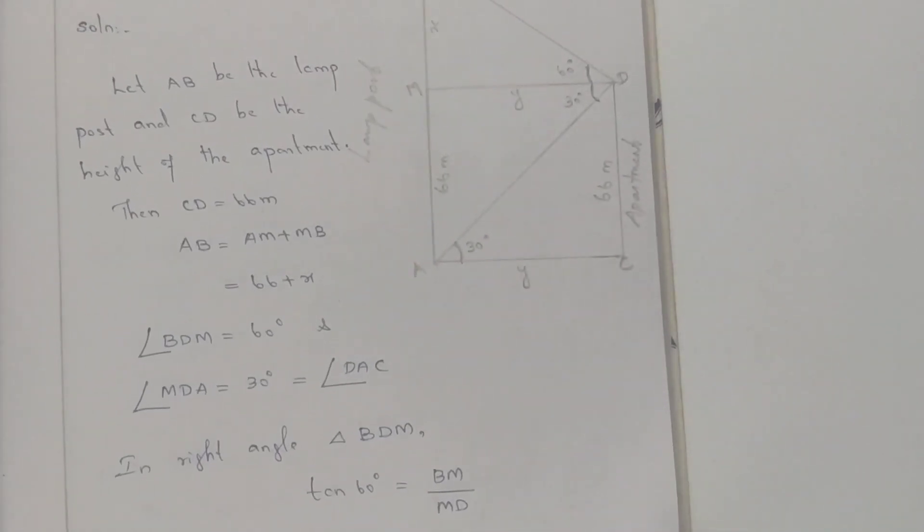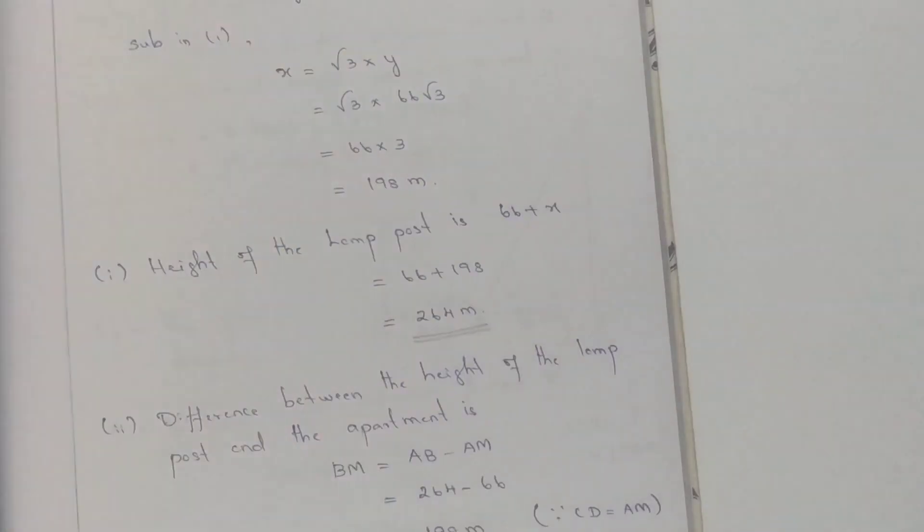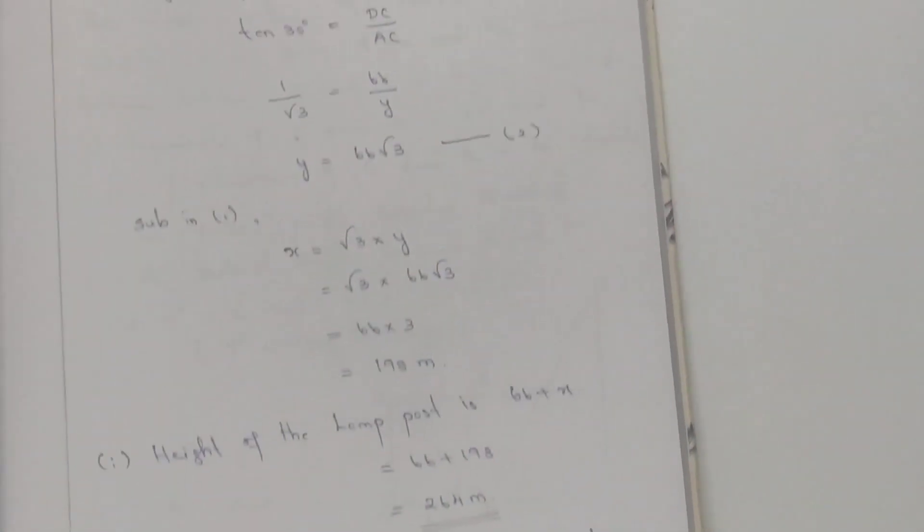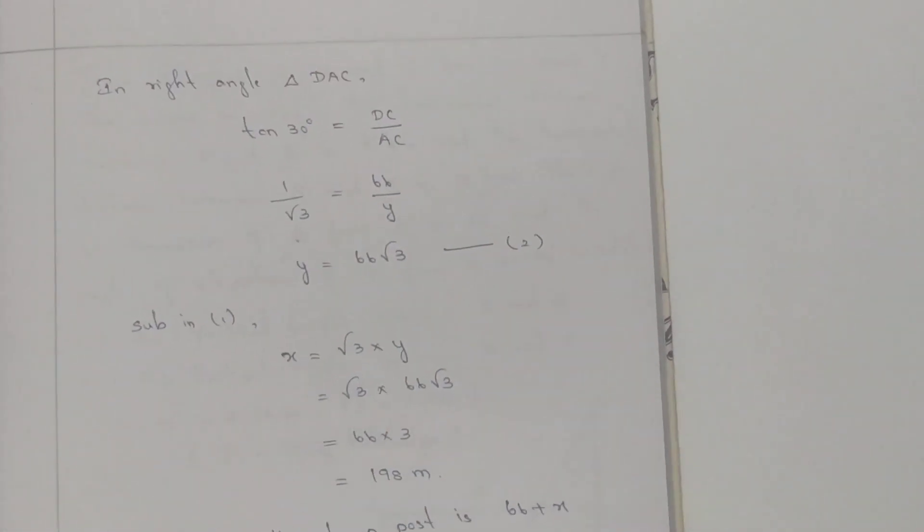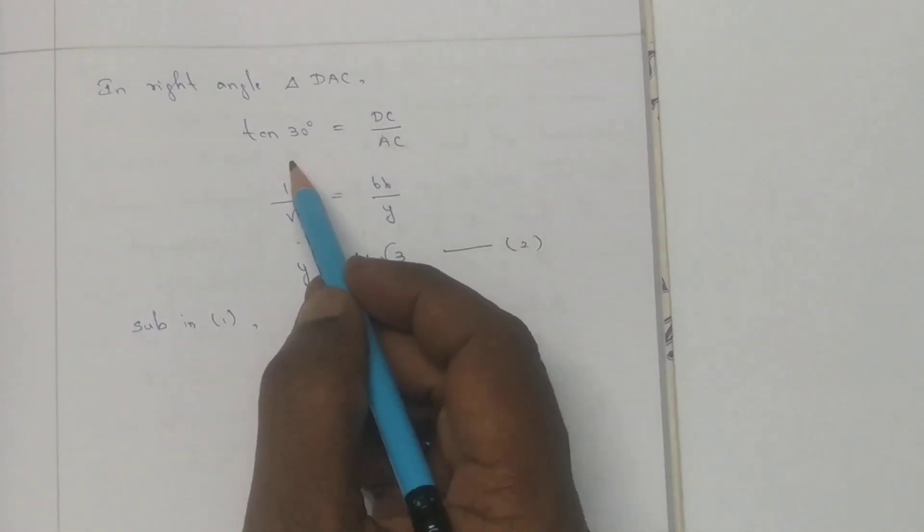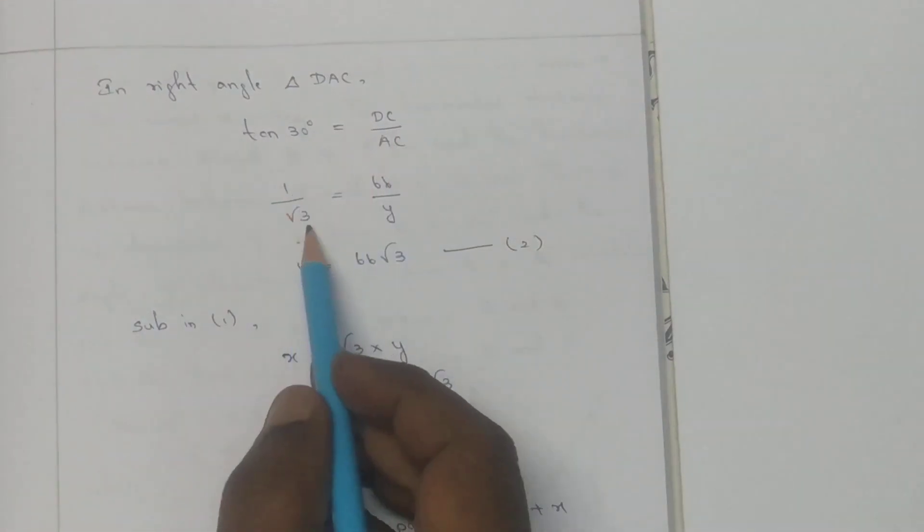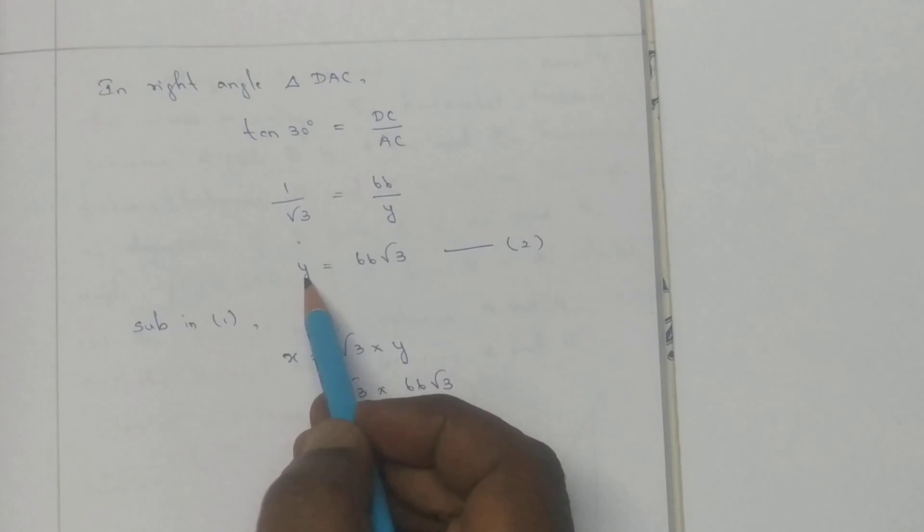In the right angle triangle DAC, tan 30 equals DC by AC. 1 by root 3 equals 66 by Y. Therefore Y equals 66 root 3. This is equation 2.